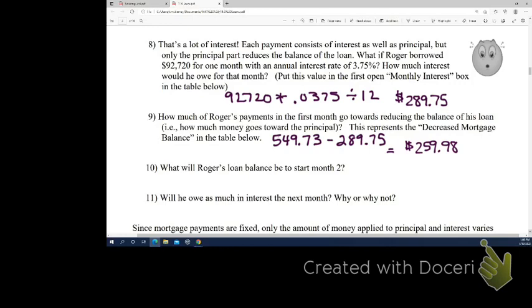So, then we're going to use this. We're going to use the table at the bottom, like what we've done before. So, what will his loan balance be to start month two? So, then if we take our 92.720, subtract, not the whole 549, because a lot of that just went to interest, subtract the 259.98. 9, 92.460.0. Anyone else get the same? 92,460.0. And two cents.